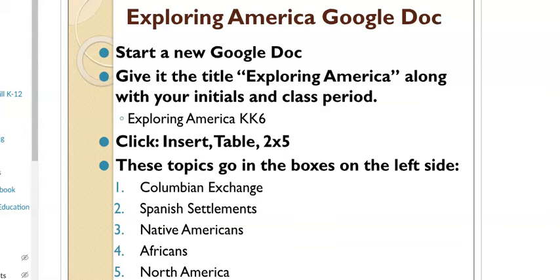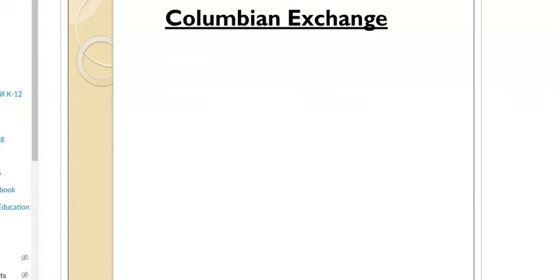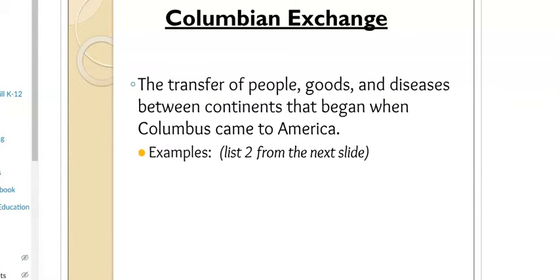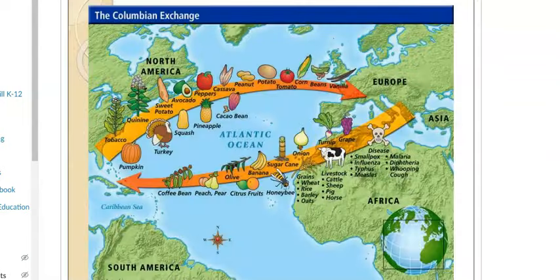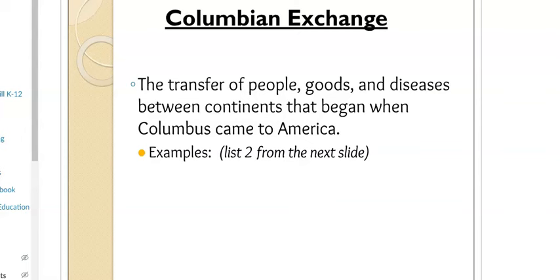The Columbian Exchange is the transfer of people, goods, and diseases between continents — like Europe and the Americas. It starts as Columbus comes to America. Columbus doesn't bring all of these goods over himself, but he basically sets the stage for other people to start coming to the Americas.